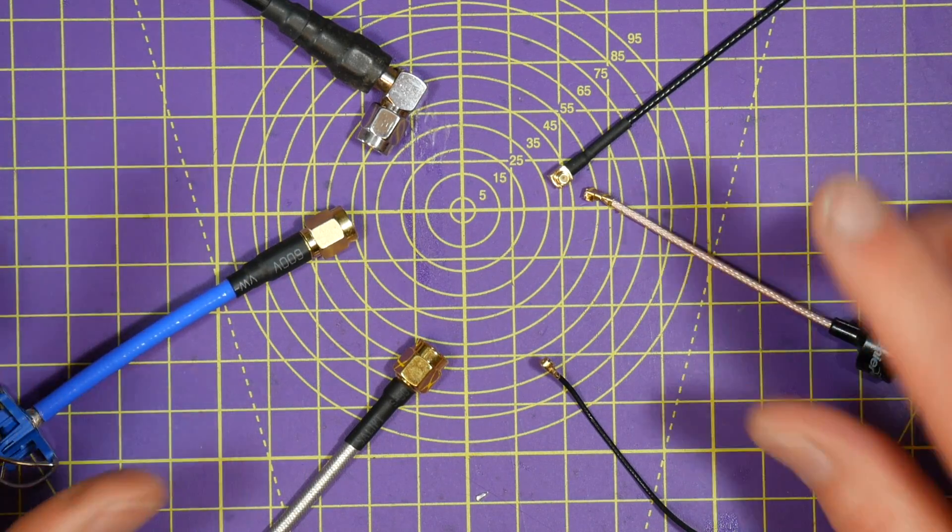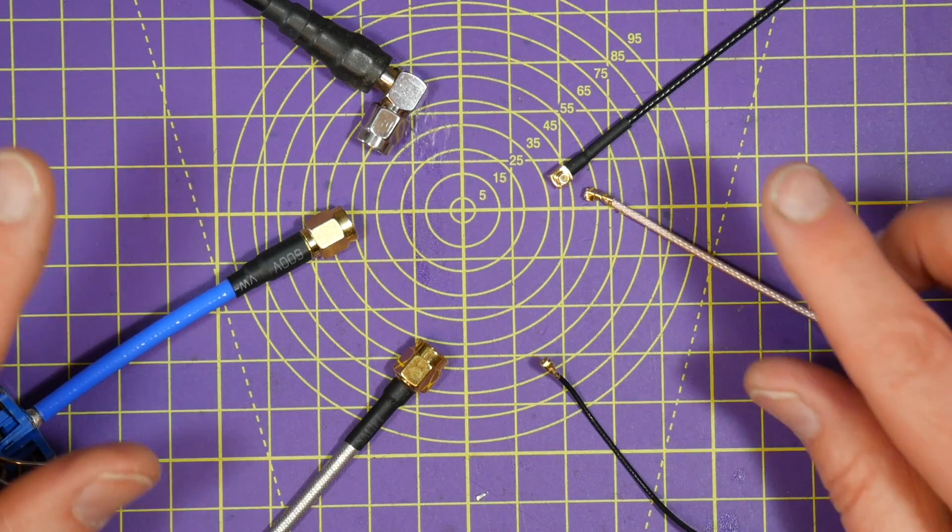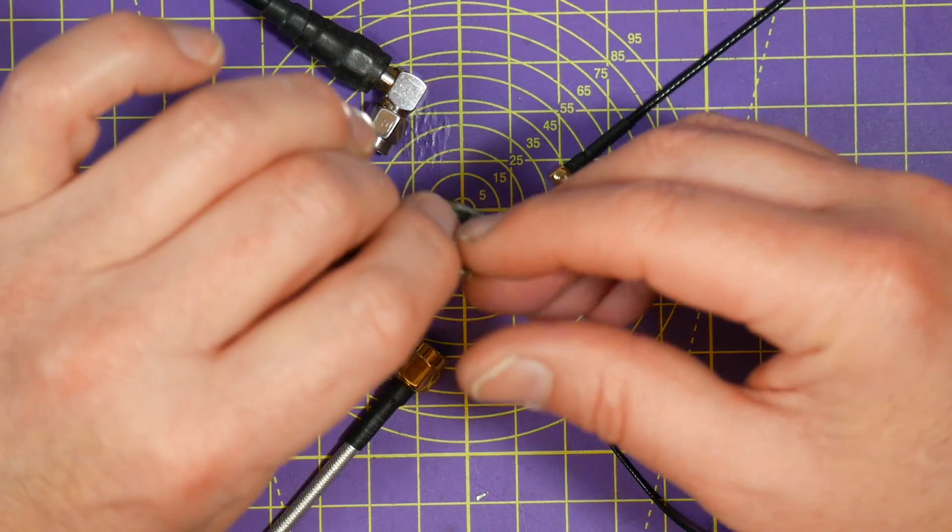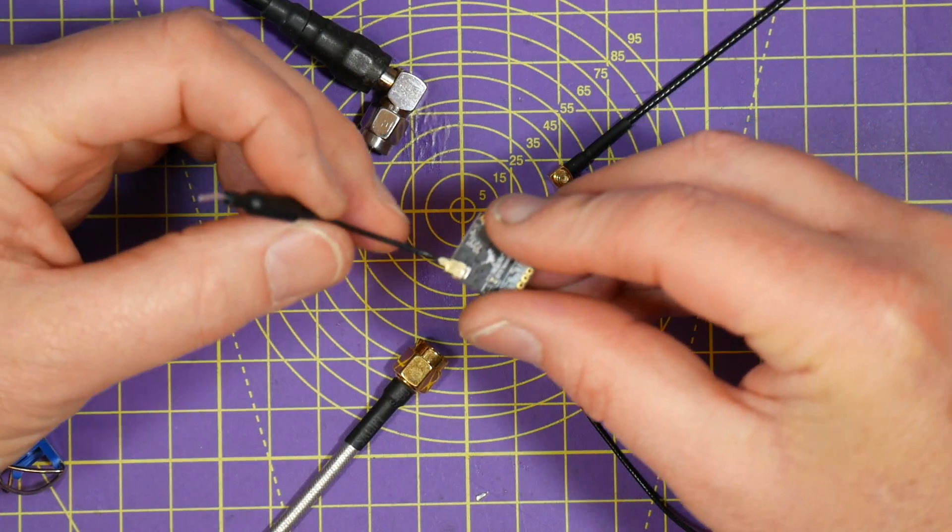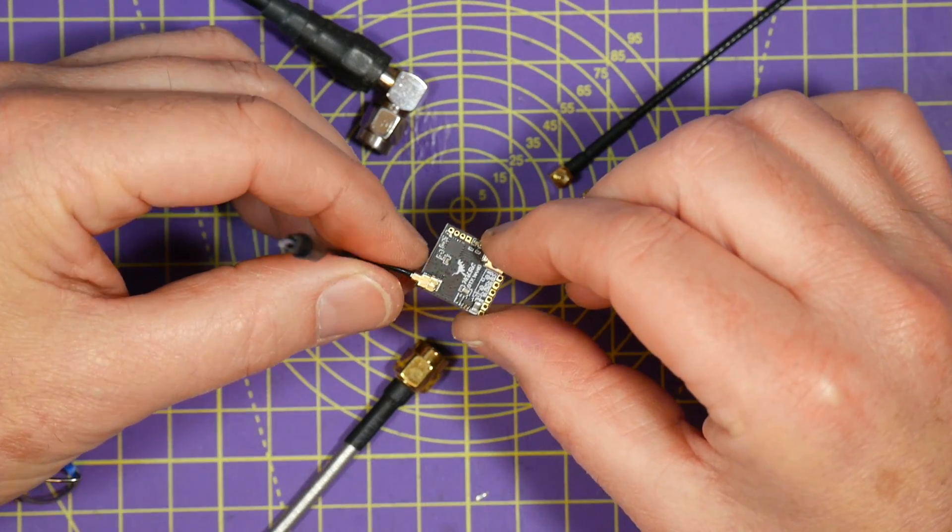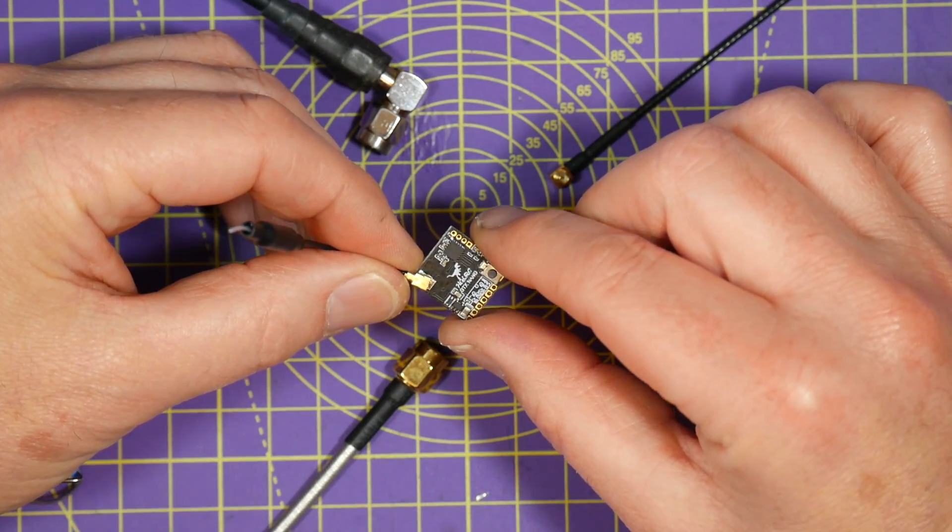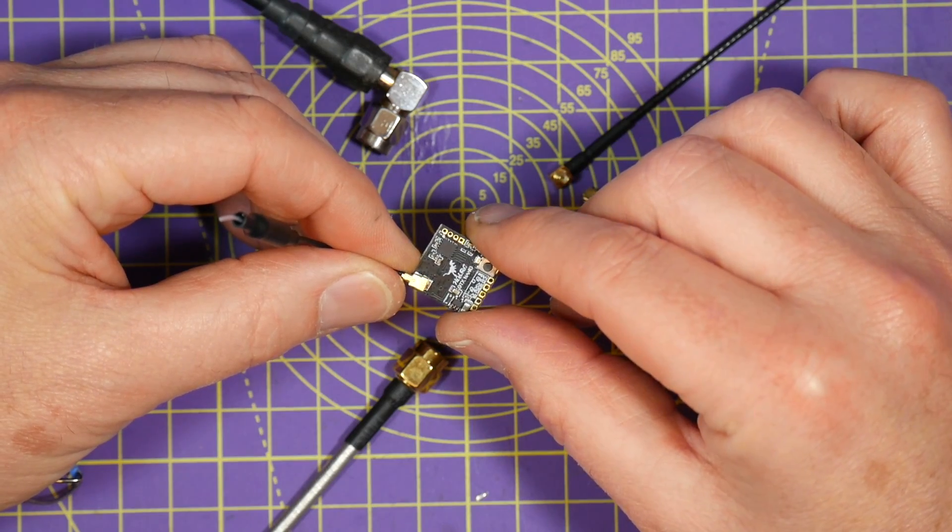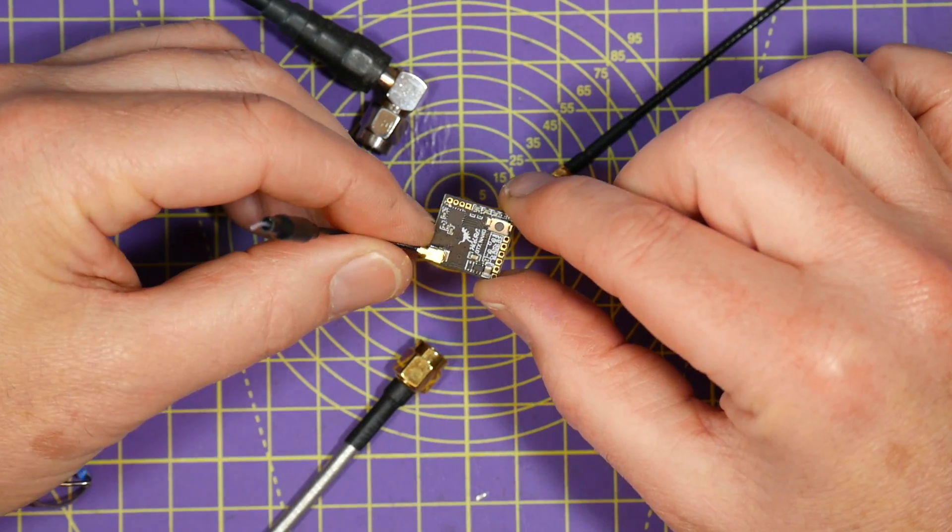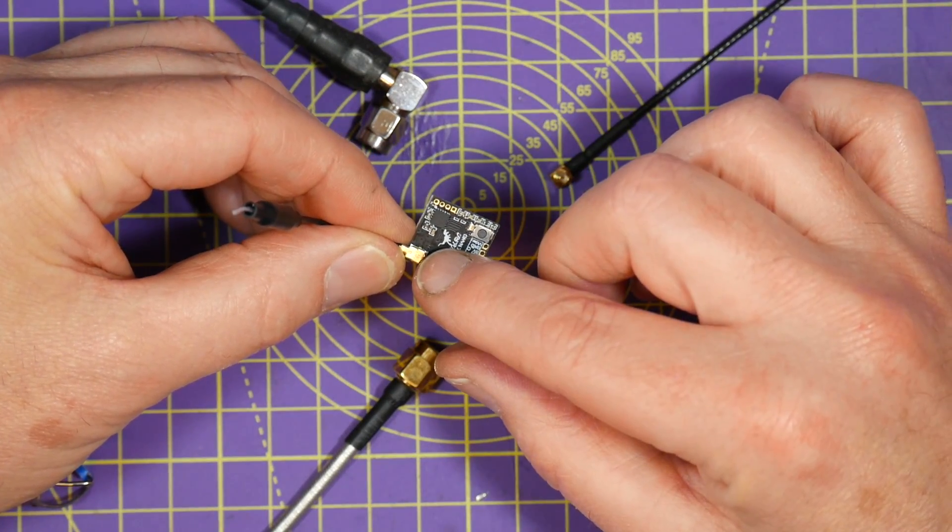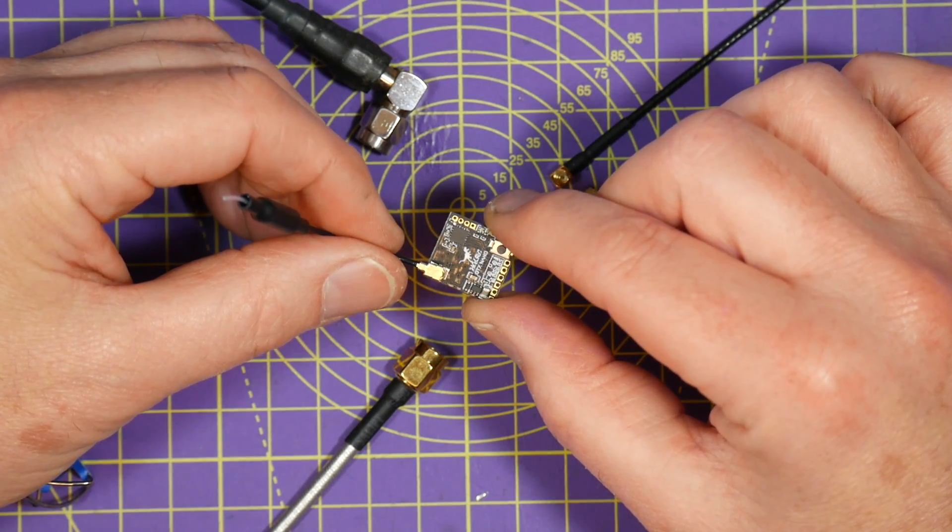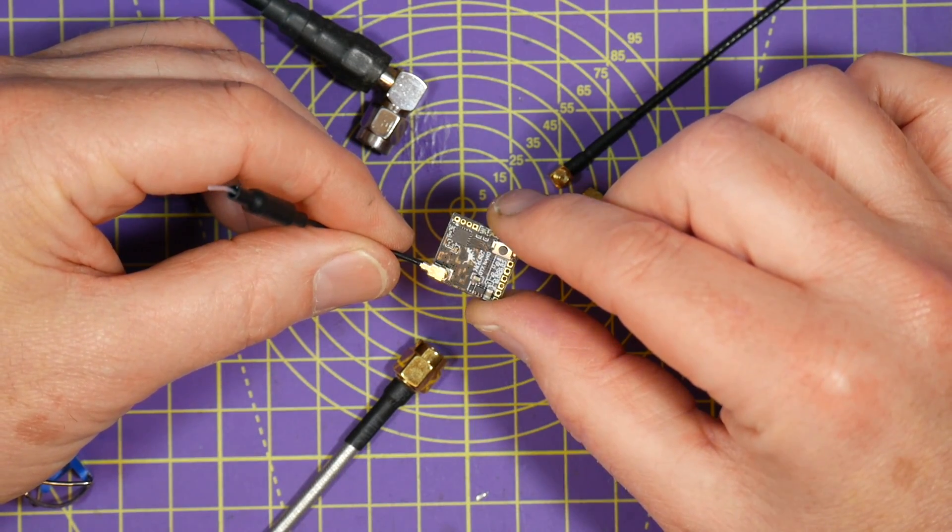Now, the whole point of an antenna connector is to connect the actual antenna, this part here, to the video transmitter, or the VTX, and also to the video receiver, the VRX. Today I'll just be talking about VTX antennas because they're the first and most likely things that you're going to break when you start flying.